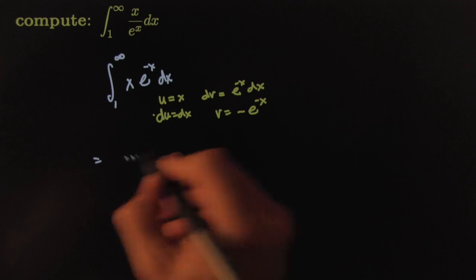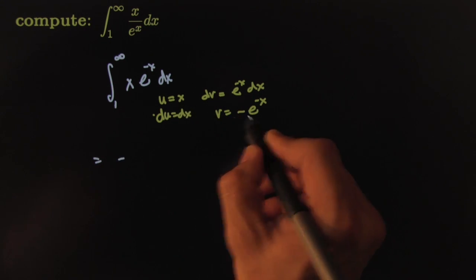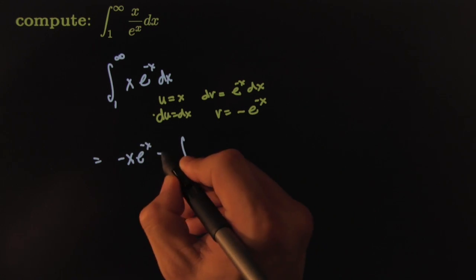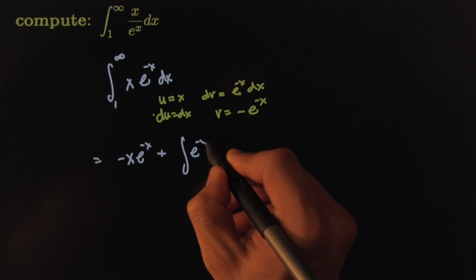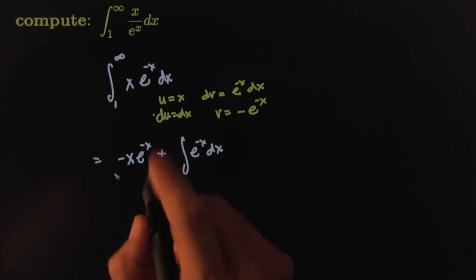That would put my integral at negative uv. So it will be negative x, e to the negative x, minus integral of v du. So that would make it a plus, e to the negative x, dx. And of course I'm still going from 1 to infinity. I'll do that in the end.